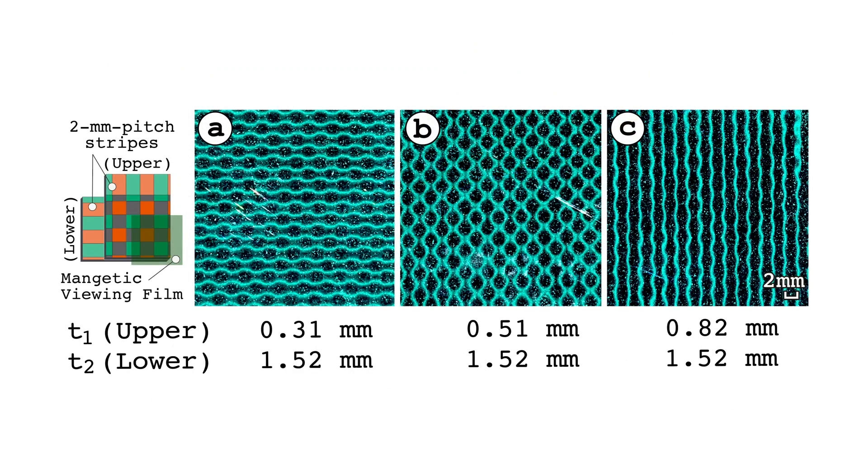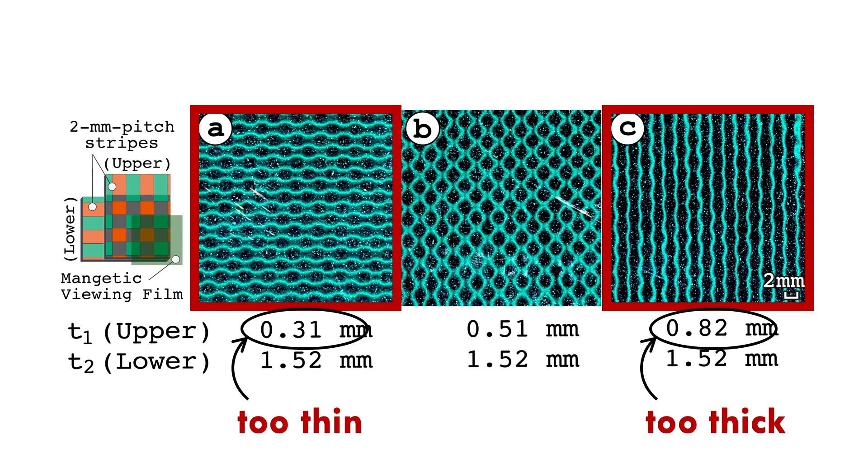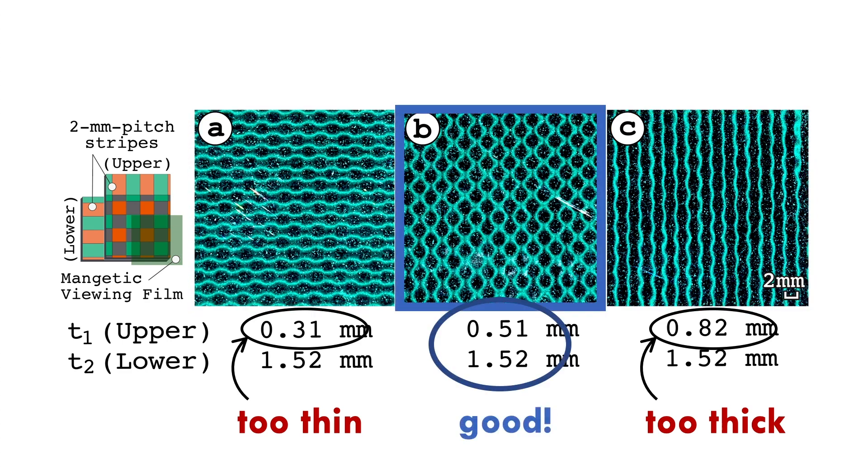Based on the calculated values, we have verified whether a checkered pattern can be created by overlaying the magnetic sheets. As you can see, when the upper sheet is too thin or too thick, distorted stripes are displayed. On the other hand, a clear checkered pattern can be seen when there are proper thicknesses.